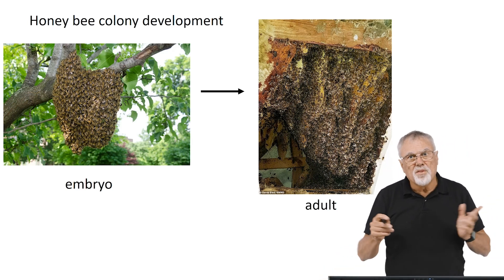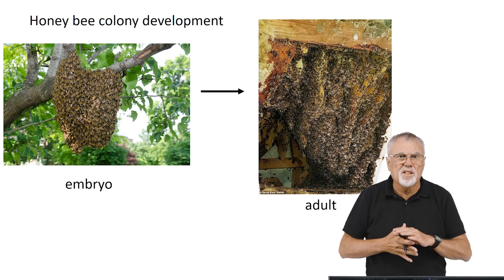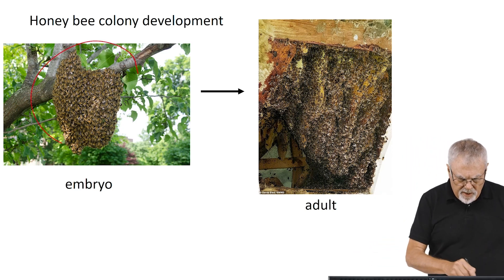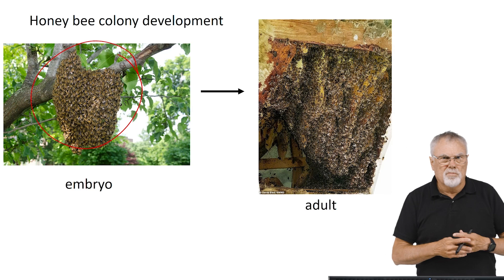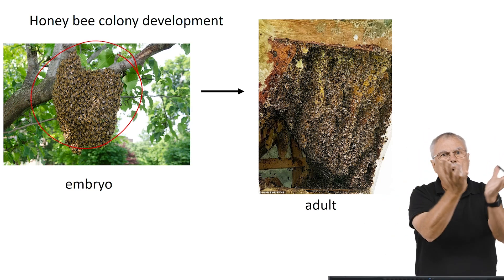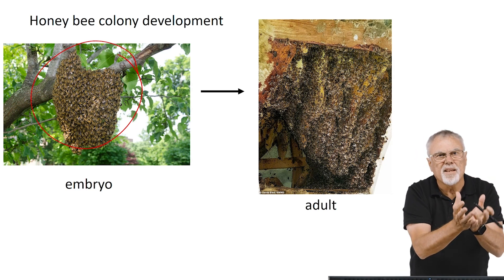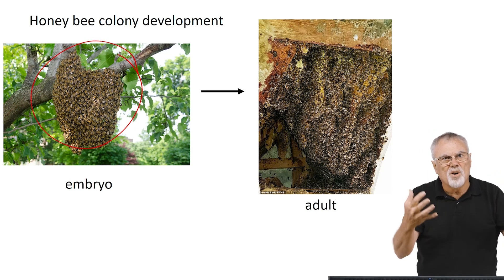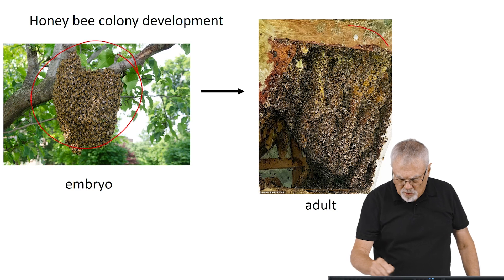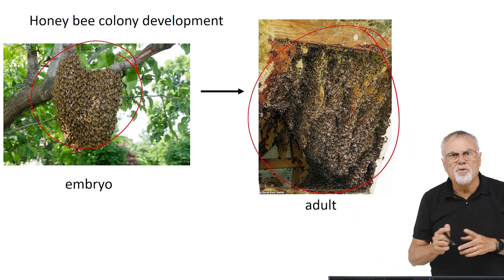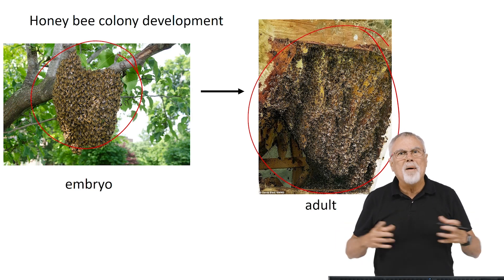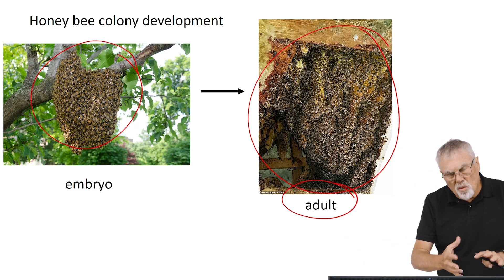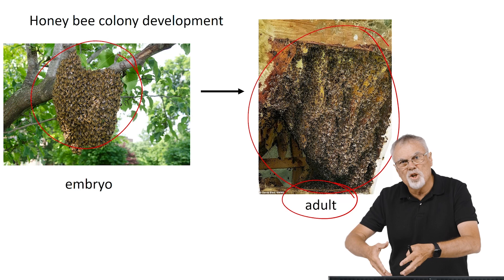Looking at honeybee development, you can think about it in the same way, in the context of how William Morton Wheeler thought about this. Here you have a swarm — it's an embryo; it hasn't yet developed, it's a raw, embryonic form of a colony. It has workers, like body cells, and a queen. Then it goes through a developmental process and eventually becomes a full-fledged colony with a full-fledged nest — it grew a body, it becomes an adult. It's a developmental process going from small and undifferentiated to large and differentiated.